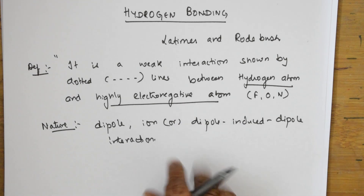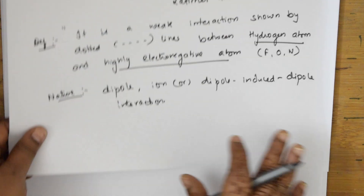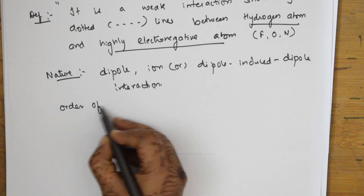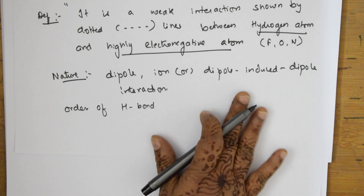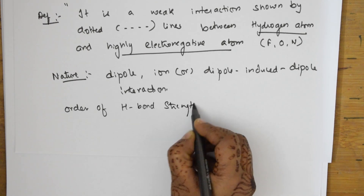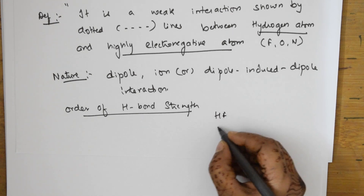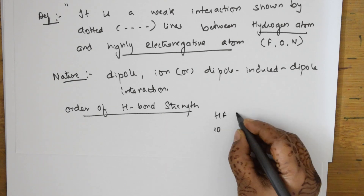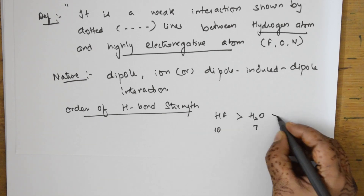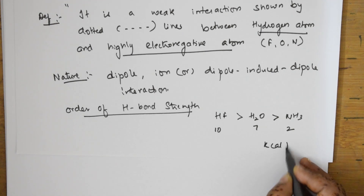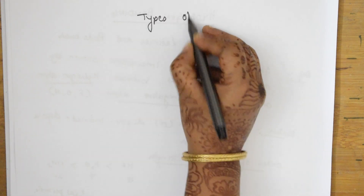Now let us see the strength order of hydrogen bonding. HF — the bond between hydrogen and fluorine — is the strongest at 10 kcal/mol. After that is water (H₂O) at 7 kcal/mol, and then NH₃. This is the strength order, and the values are given in kilocalories per mole.